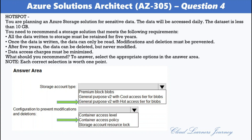Immutable storage for Azure Blob Storage enables users to store business-critical data in a write-once, read-many (WORM) state. Data cannot be modified or deleted for a user-specified interval. By configuring immutability policies for blob data, you can protect your data from overrides and deletes.